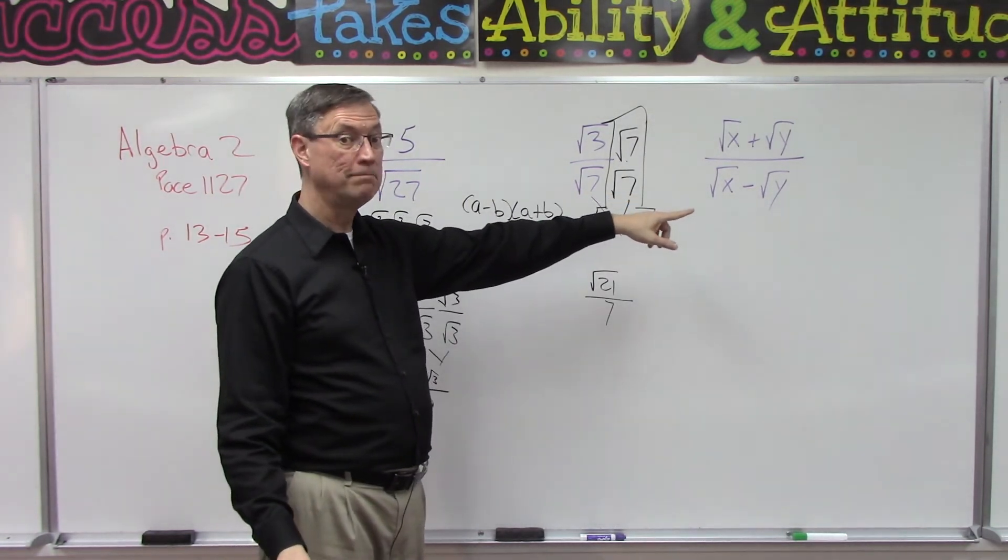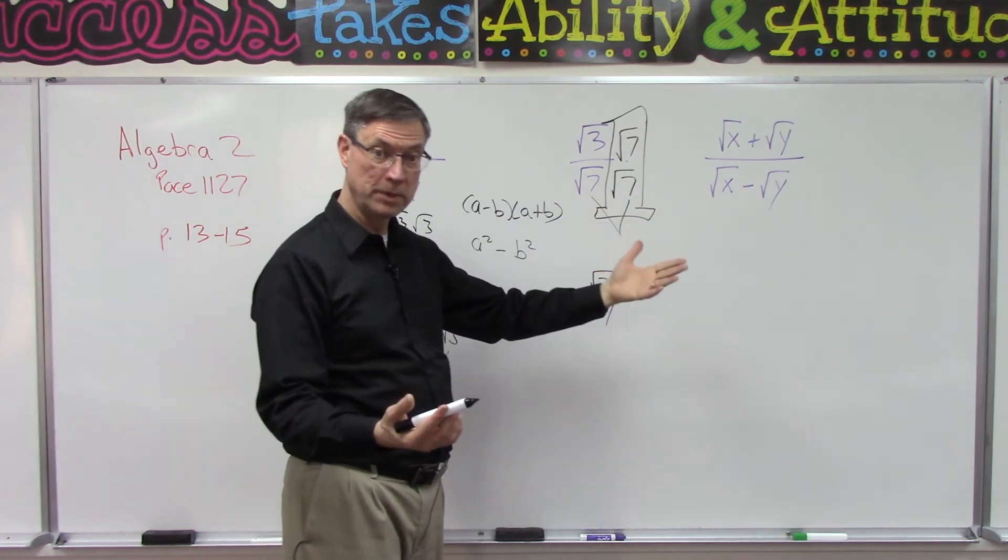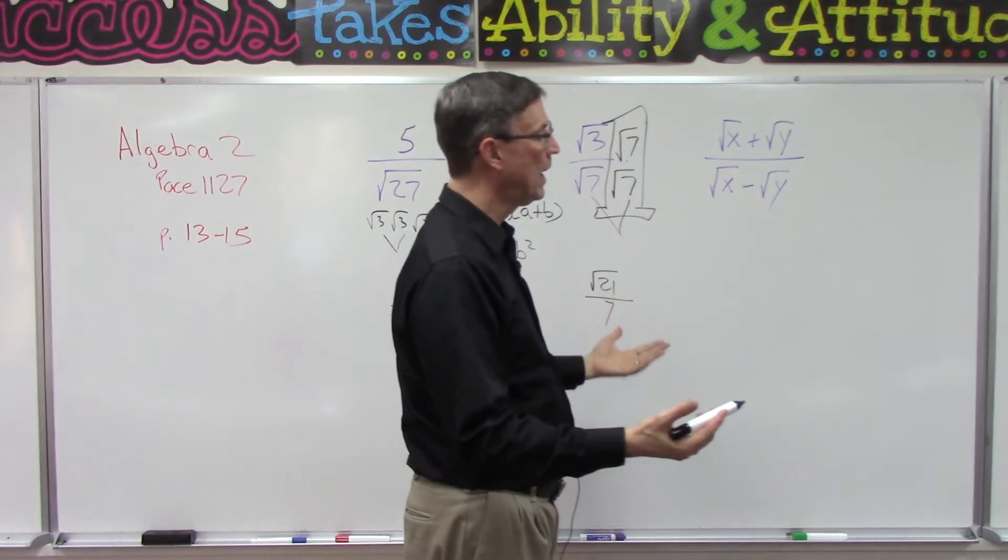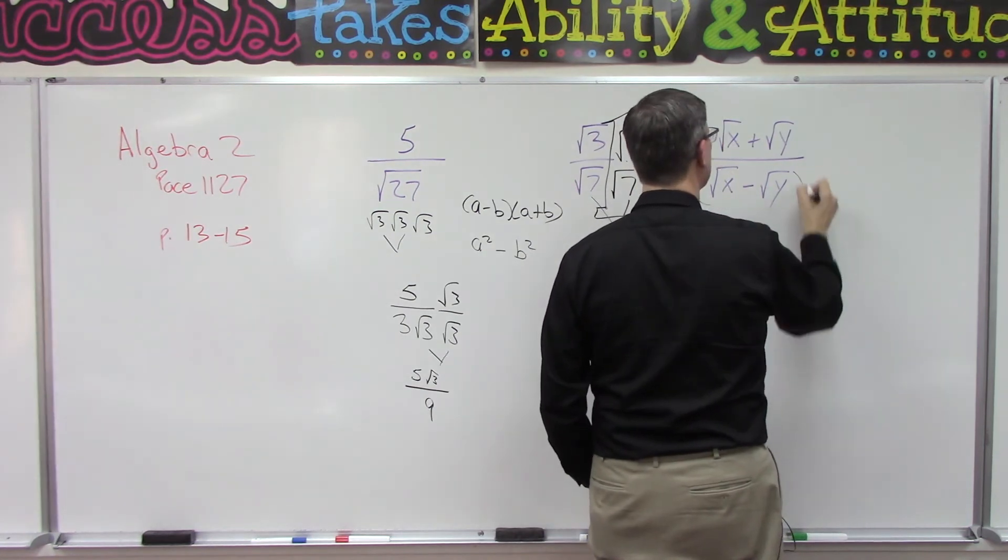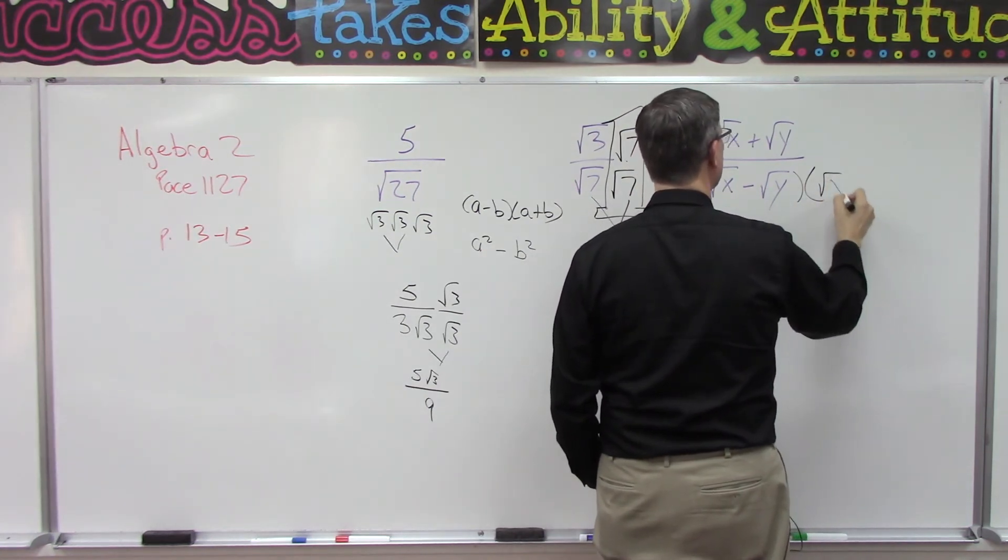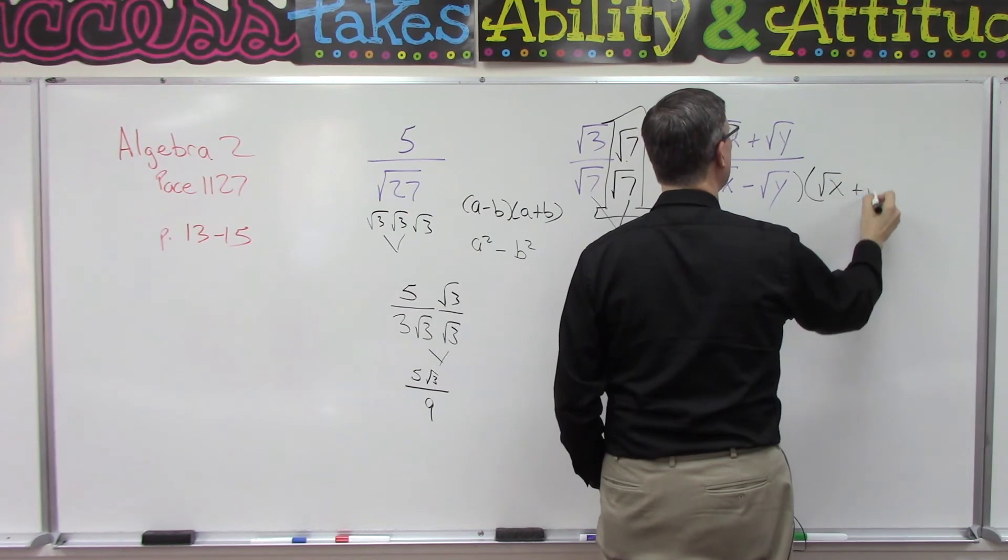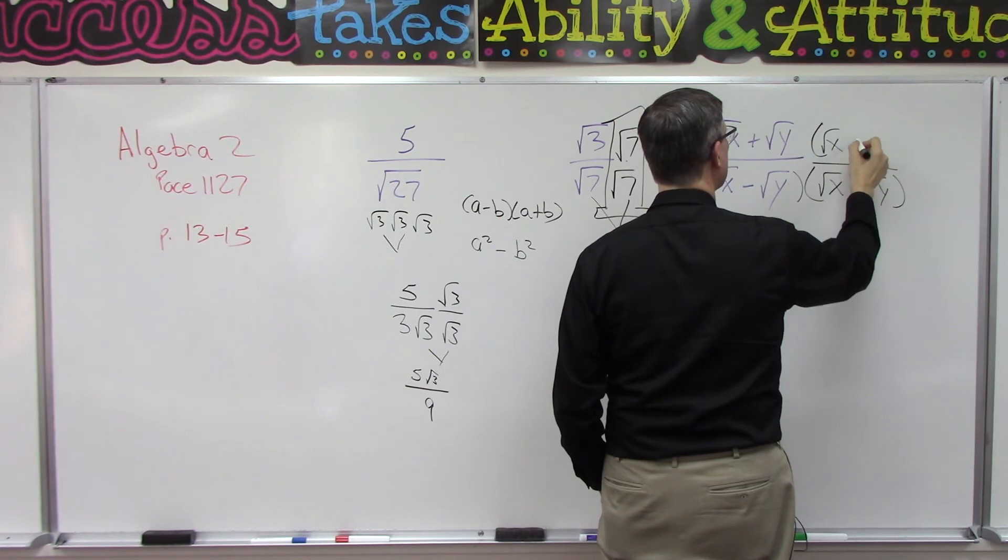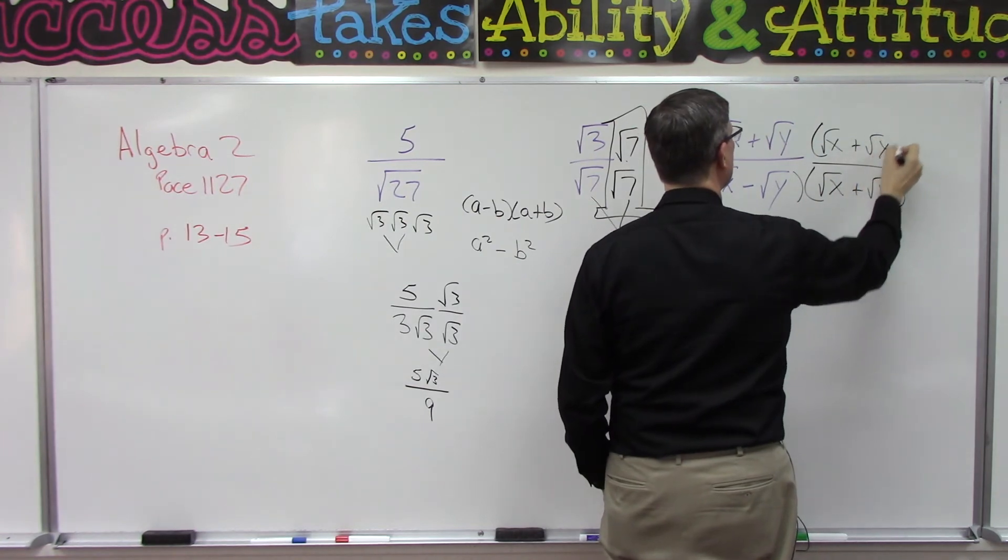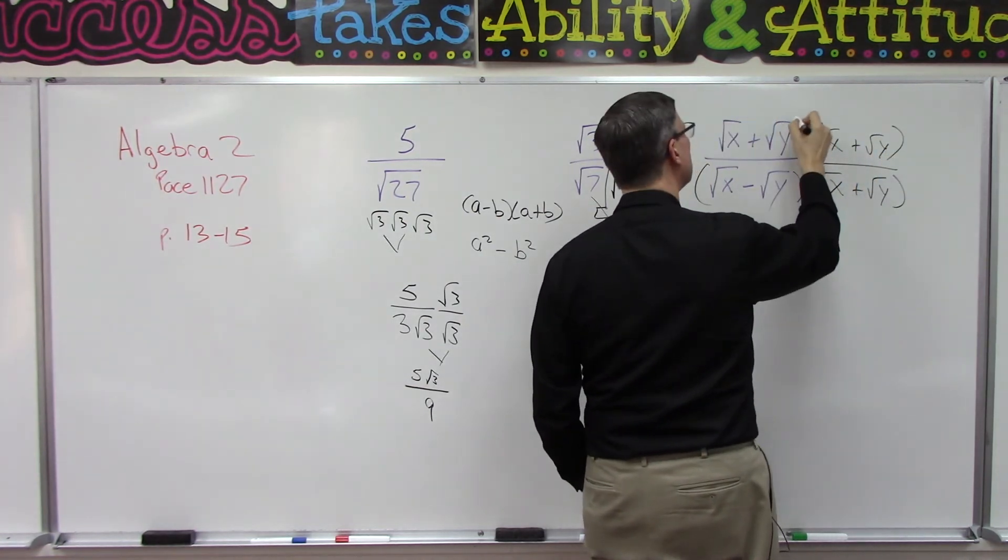turn this into just x and y and have the middle term disappear and get rid of all of the radicals in the process. So down here, I'm going to do the square root of x plus the square root of y. Do the same thing up here: square root of x plus the square root of y. Should put parentheses around this.